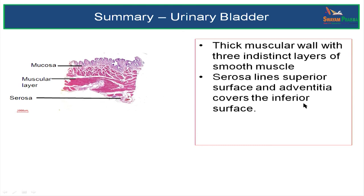The inferior surface of the bladder is covered by adventitia. That completes the class on microscopic anatomy of ureter and urinary bladder.